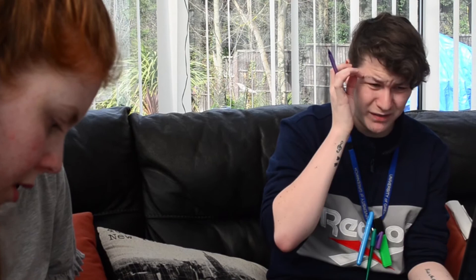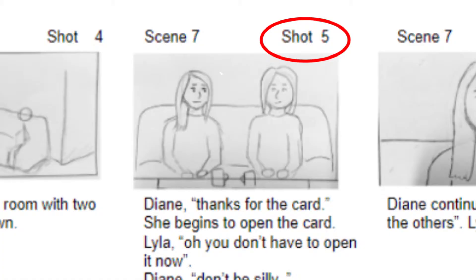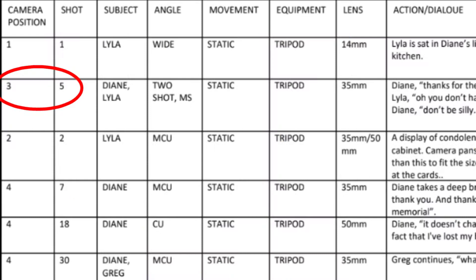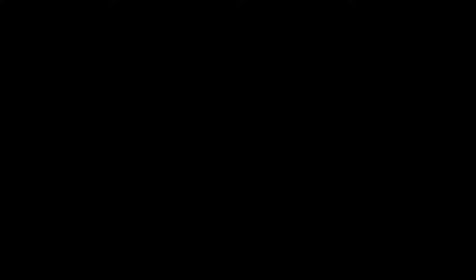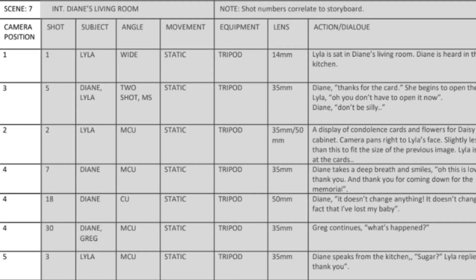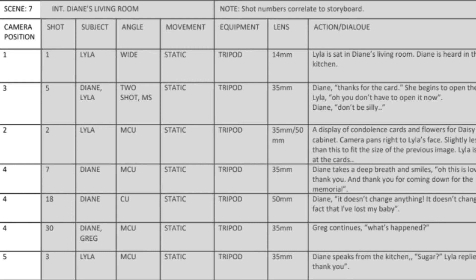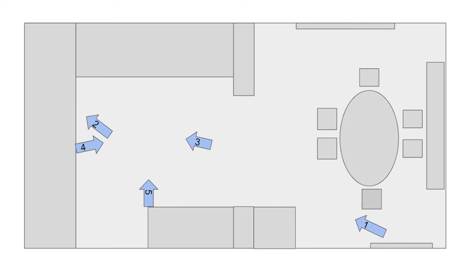On every day of the shoot, using the floor plans to communicate to the rest of the crew how we were going to be shooting the scene sometimes got a little bit confusing, because I used number systems on the storyboard, shot list and camera floor plans which all correlated together in the actual shooting plan. So in hindsight I think I should have used a letter system or colours to separate each document, however I would definitely use the camera floor plans again when doing complicated shoots.